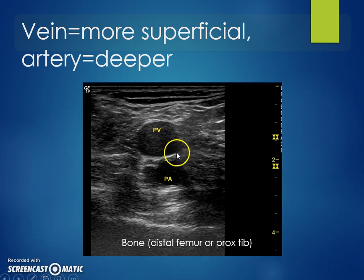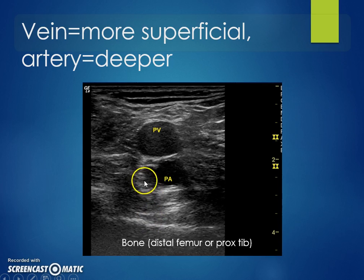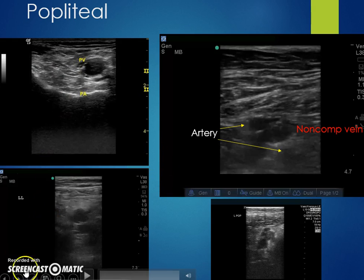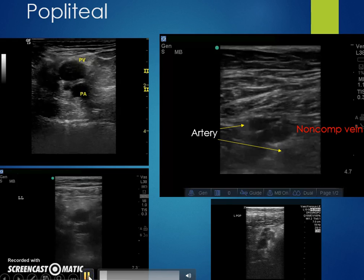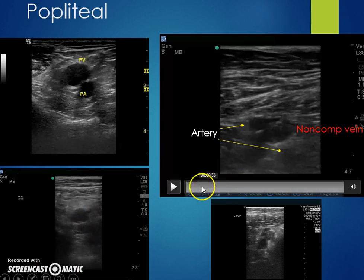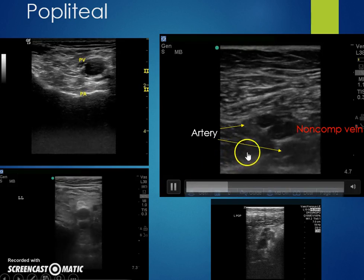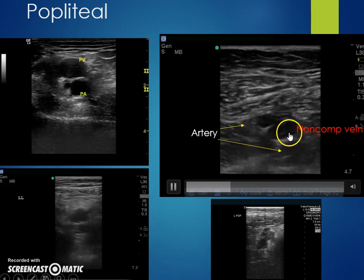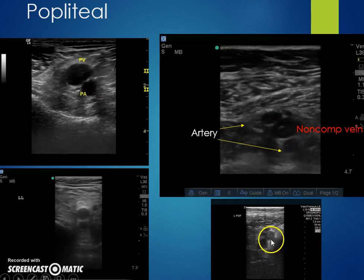The popliteal vein will be more superficial than the popliteal artery. Include enough depth to visualize the bone — either the distal femur or proximal tibia — to properly frame the image. Examples show a completely compressible popliteal vein on top of the pulsating popliteal artery, as well as a non-compressible vein sandwiched between two arteries with clot present, and clot right at the level of the trifurcation.